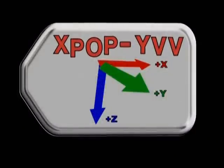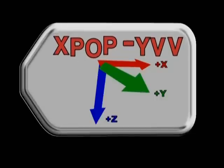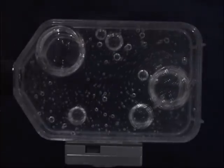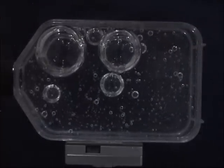Here the station is in X-POP attitude, which is a solar inertial attitude. Look at the motion of the bubbles—they tend to move around in a circle.